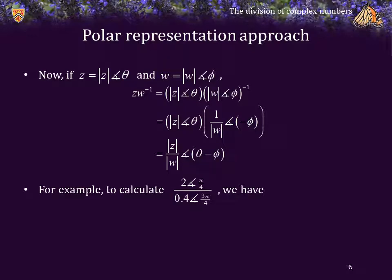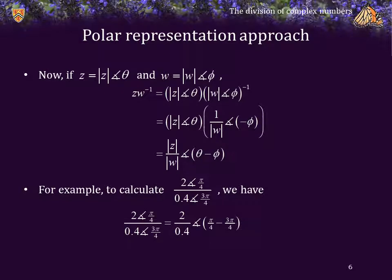For example, if we have 2 phase pi over 4 and we divide that by 0.4 phase 3 pi over 4, we calculate the ratio of the magnitudes and the difference of the angles. Now, 2 over 0.4 is 5, and pi over 4 minus 3 pi over 4 is negative pi over 2. That should look familiar — negative pi over 2 is negative j, so the result is negative 5j.